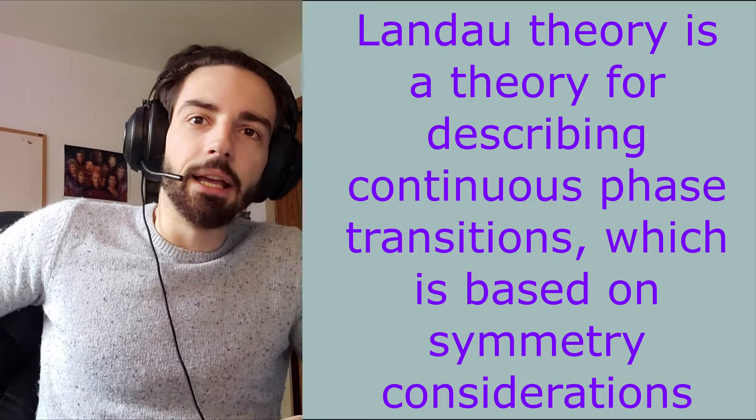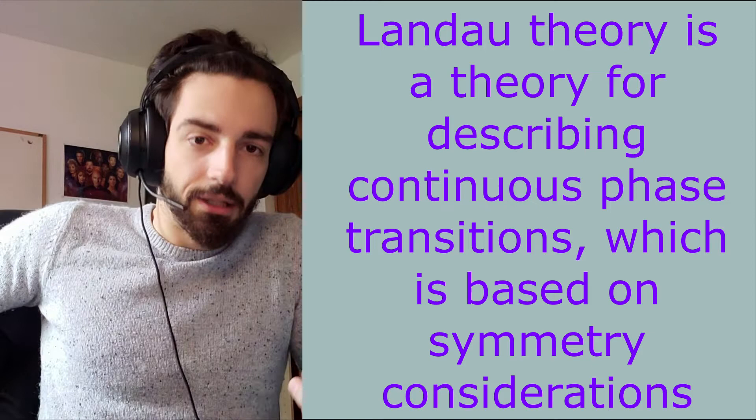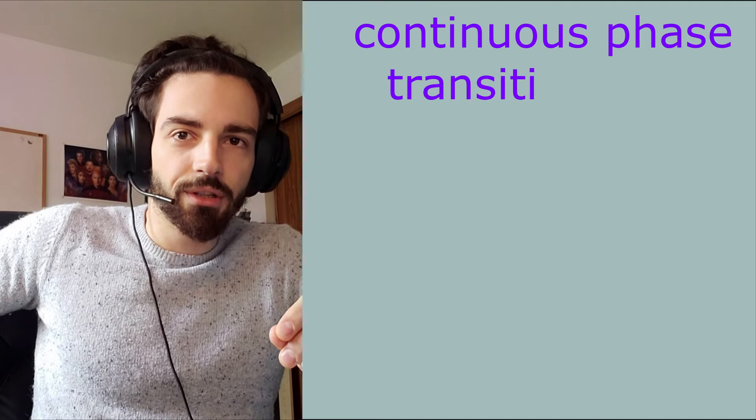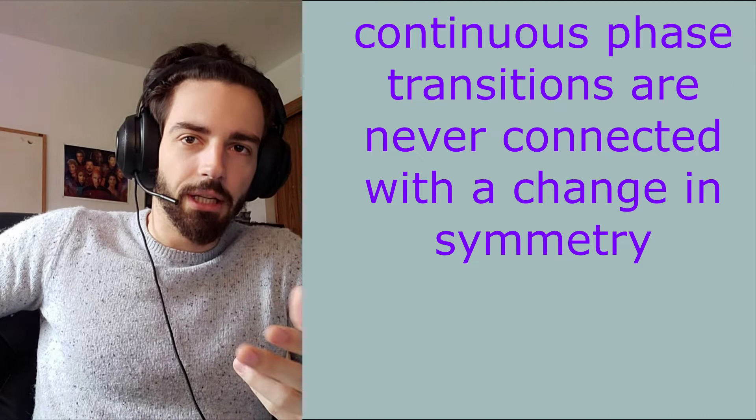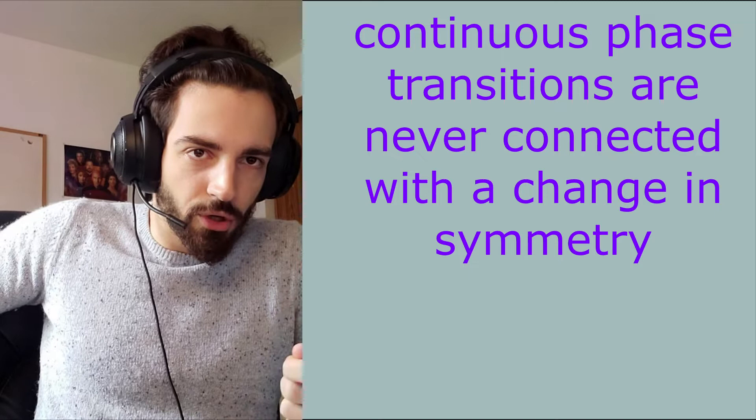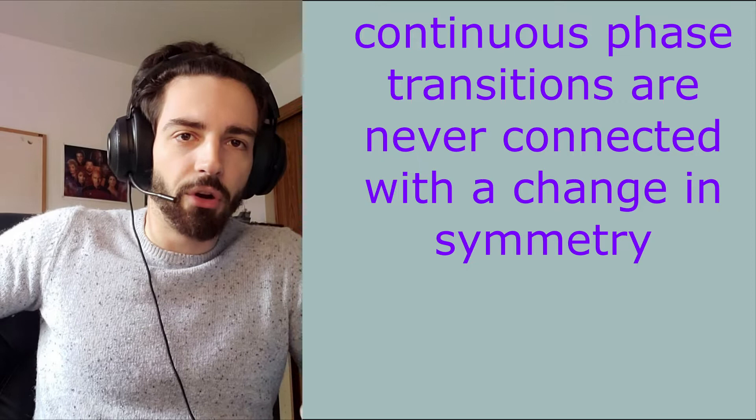To quickly recap, Landau theory is the framework for describing continuous phase transitions and this is all based on symmetry considerations. So now moving on to what Landau theory does and how it does this. And this is started with the very important fact and forms the foundation of Landau theory: continuous phase transitions are never connected with a change in symmetry. So I use the word 'connected' here deliberately. A phase transition can still be continuous even if the body has a change in symmetry, such as a change in the lattice symmetry, but this is because even though the symmetry changes we can still describe this change with a continuous variable, and correspondingly we can call the phase transition continuous.